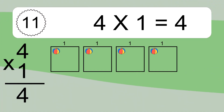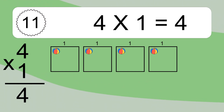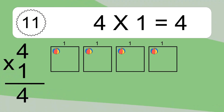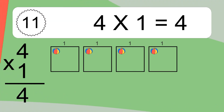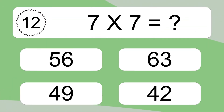We have 4 boxes, and each box has 1 colorful ball inside. If you count all the balls in all the boxes together, you will have 4 times 1 balls. This equals 4 balls.